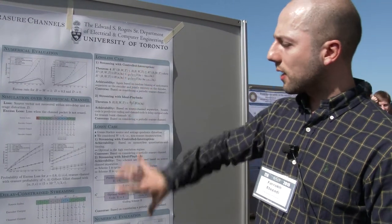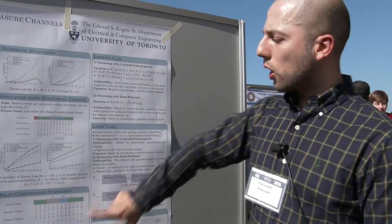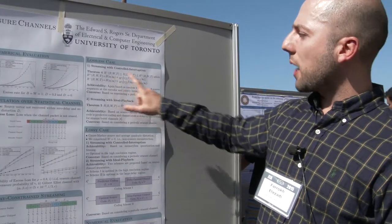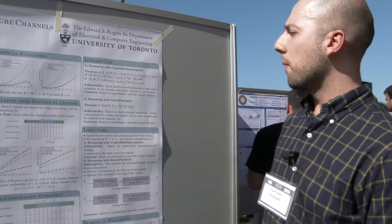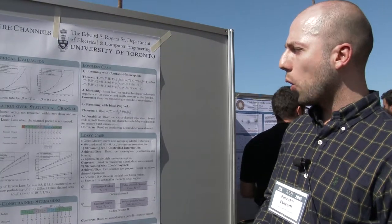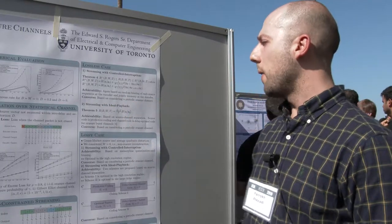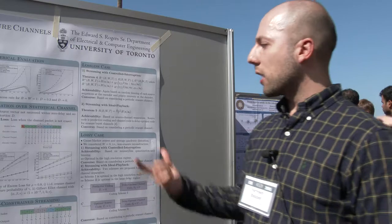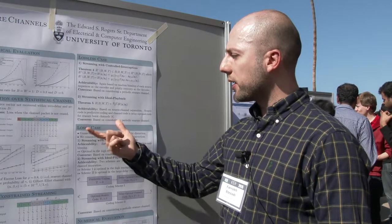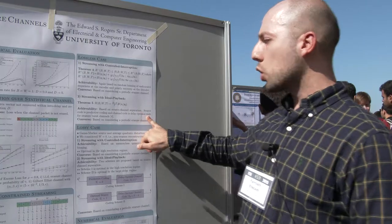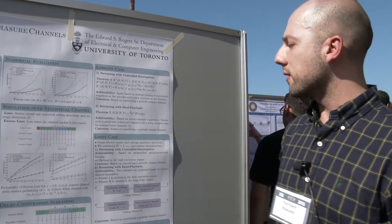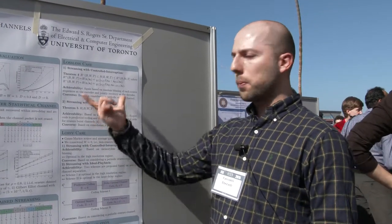For this one, we again consider the lossless case and lossy case. For the lossless case, for the streaming with controlled disruption, which is this setup, we extend the result that we have here to this setup. We can see that we have the same kind of theorem, except that we have a delay notation here. The achievability is again based on random binning and simultaneously recovering using Slepian-Wolf coding at the decoder, and the converse is based on considering a periodic erasure channel. For streaming with ideal playback, we can show that the separation-based scheme, which uses the optimal predictive coding source code, and the channel code is in fact a delay-optimal channel code by Martinian and Trott, can achieve the optimal rate, which is a function of B, W, and T. And the converse again is based on considering a periodic erasure channel for this case.